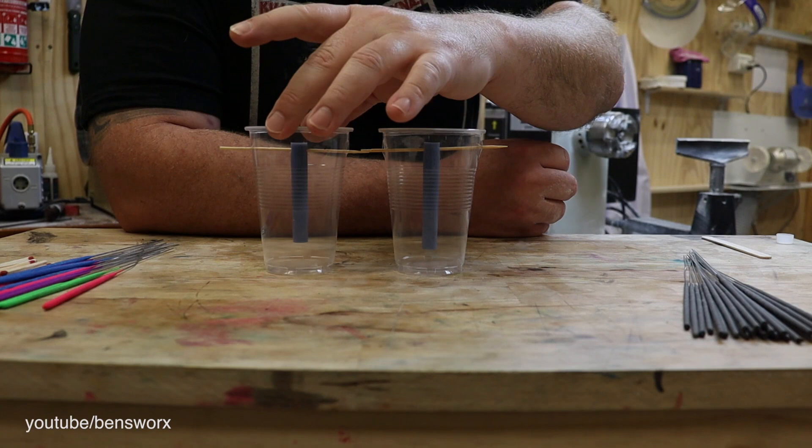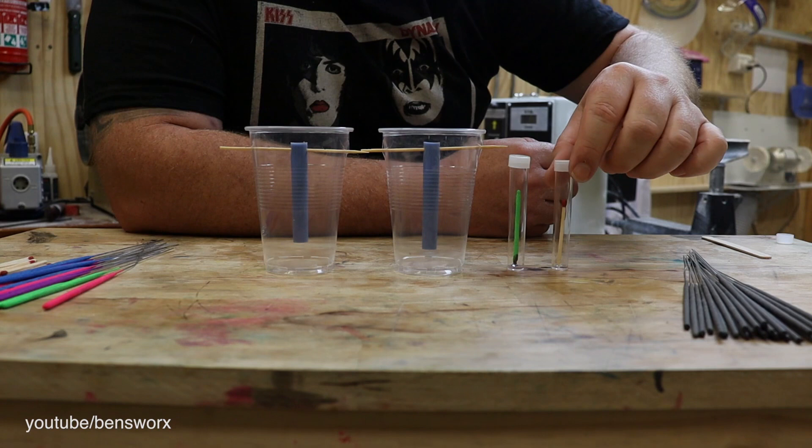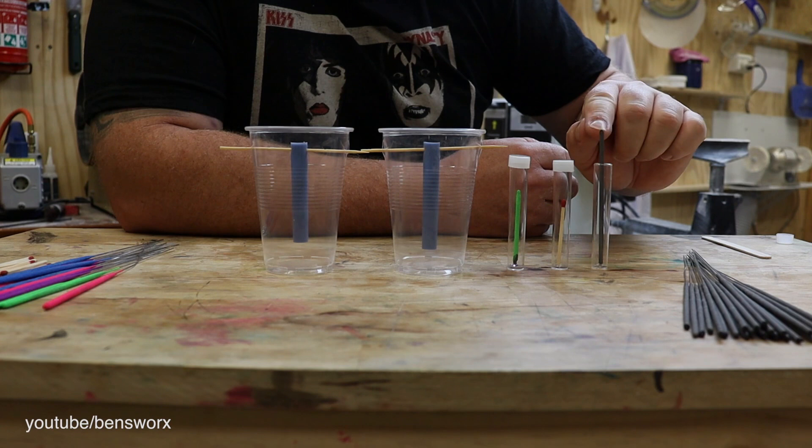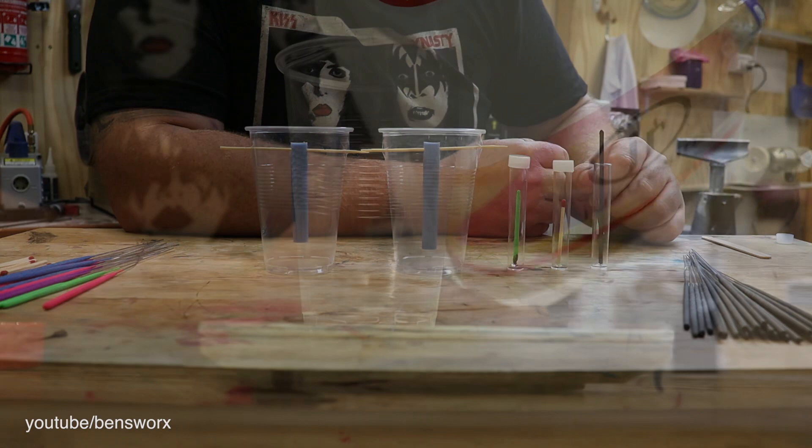I've gone ahead and got all my moulds ready. I've got the two void moulds, the sparkler mould, the match mould, and I also did a bonus one. I did a sparkler with the head of the sparkler outside of the resin. That way we can light it outside and see if it will continue down the resin.